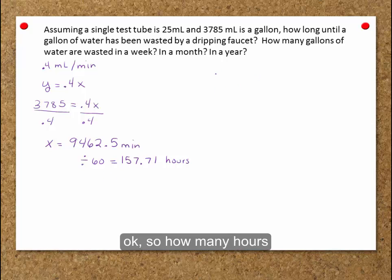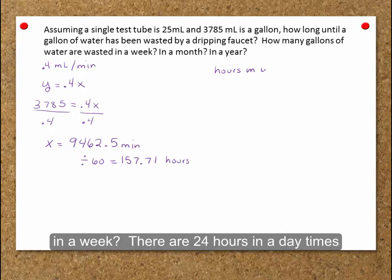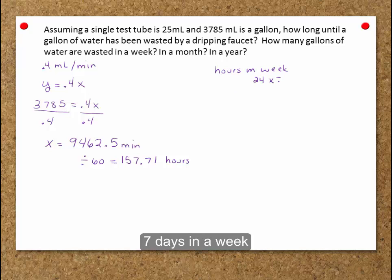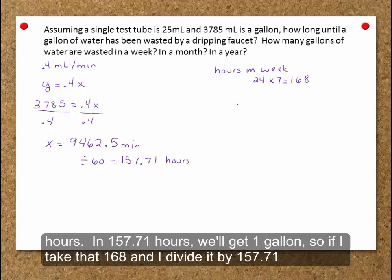So how many hours in a week? There are 24 hours in a day times 7 days in a week. So that's 168 hours.